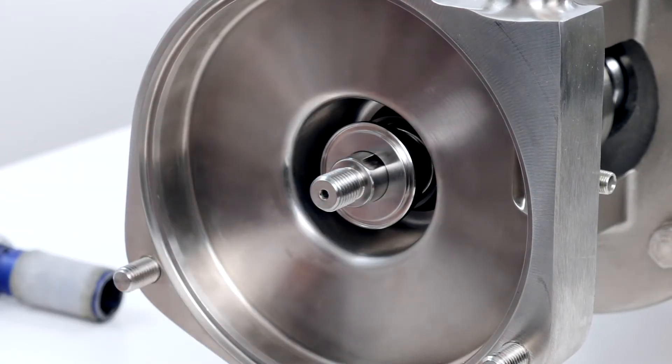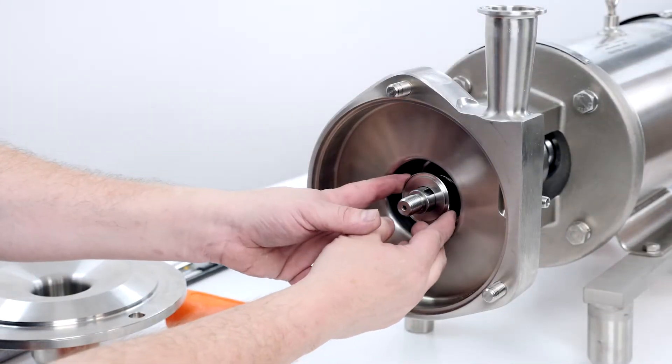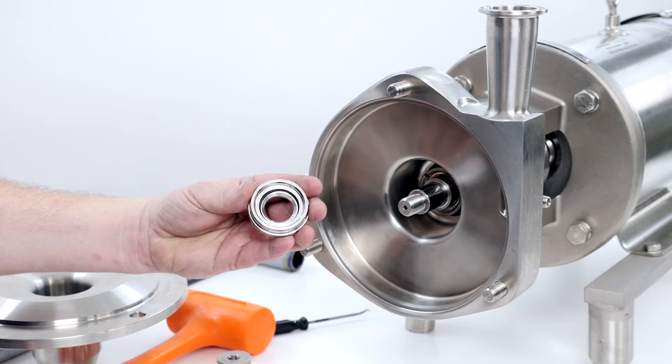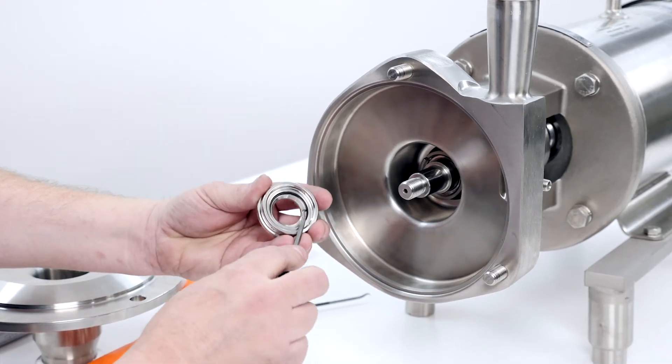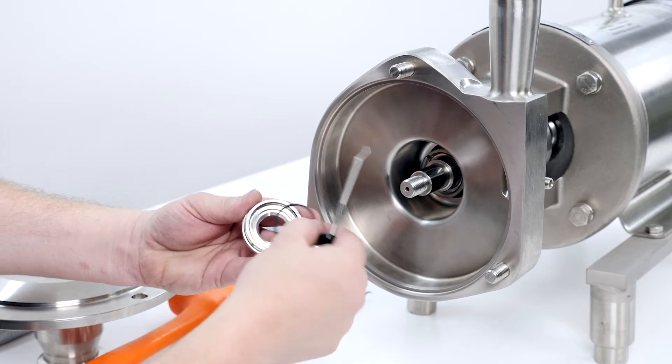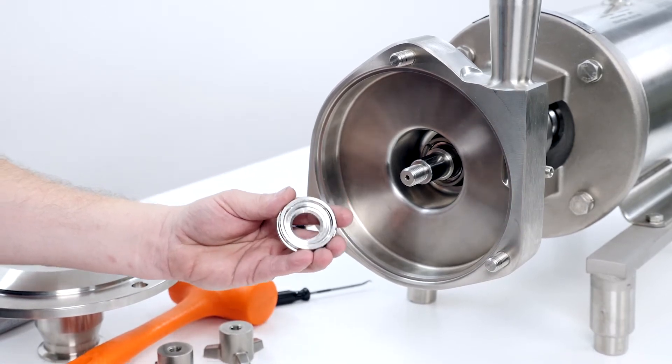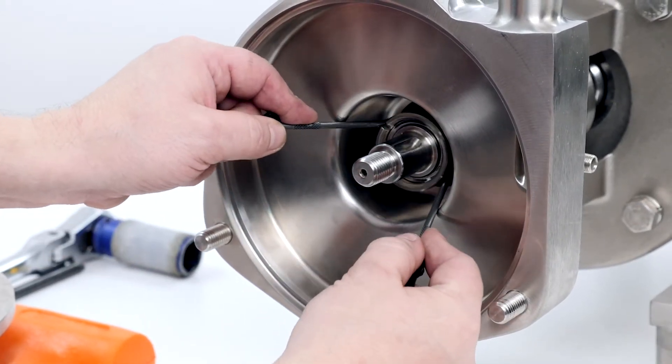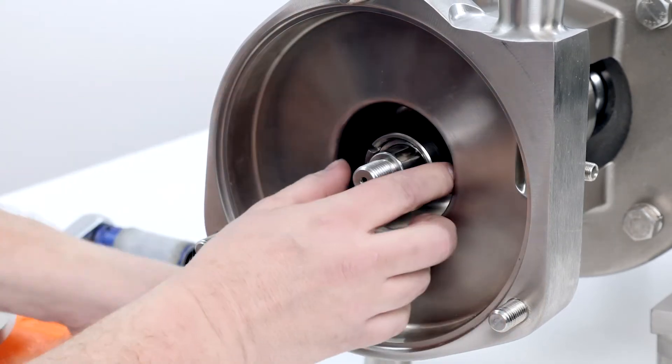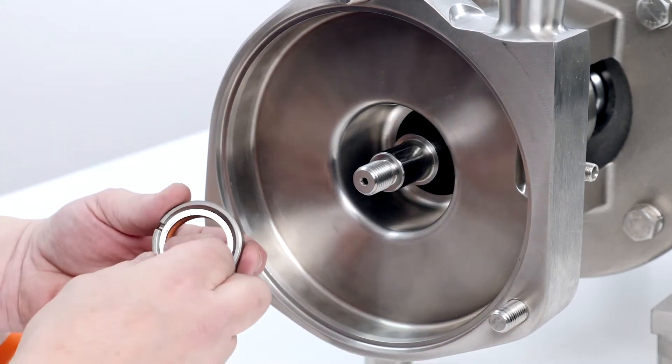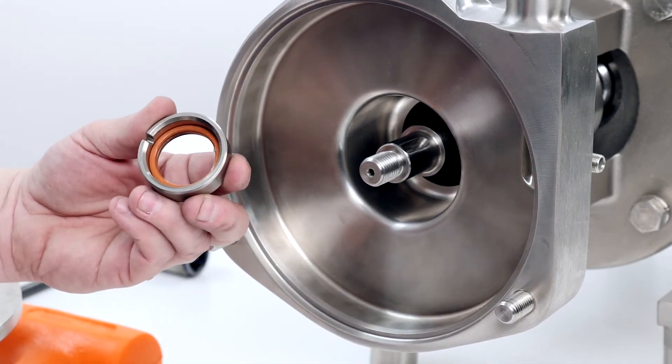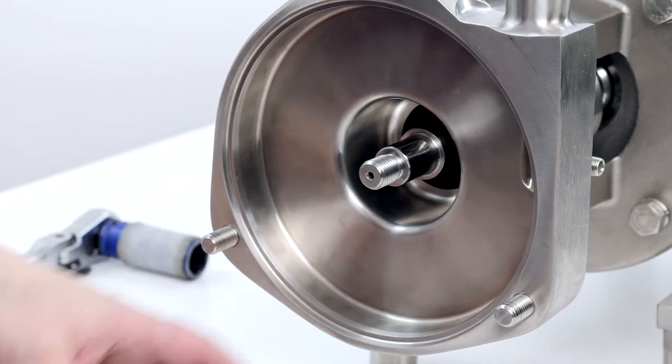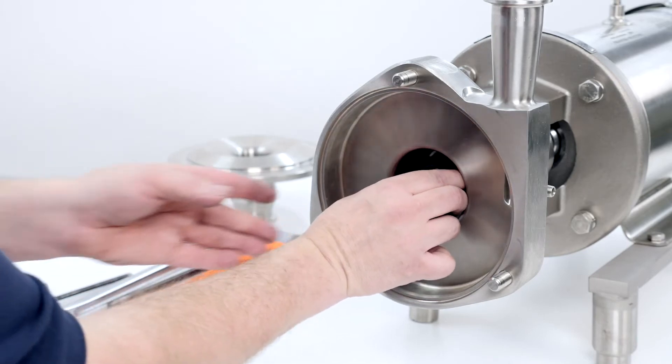Compress the seal and remove the impeller key. Remove the rotating seal assembly and discard it. Remove the stationary seal assembly and discard it.